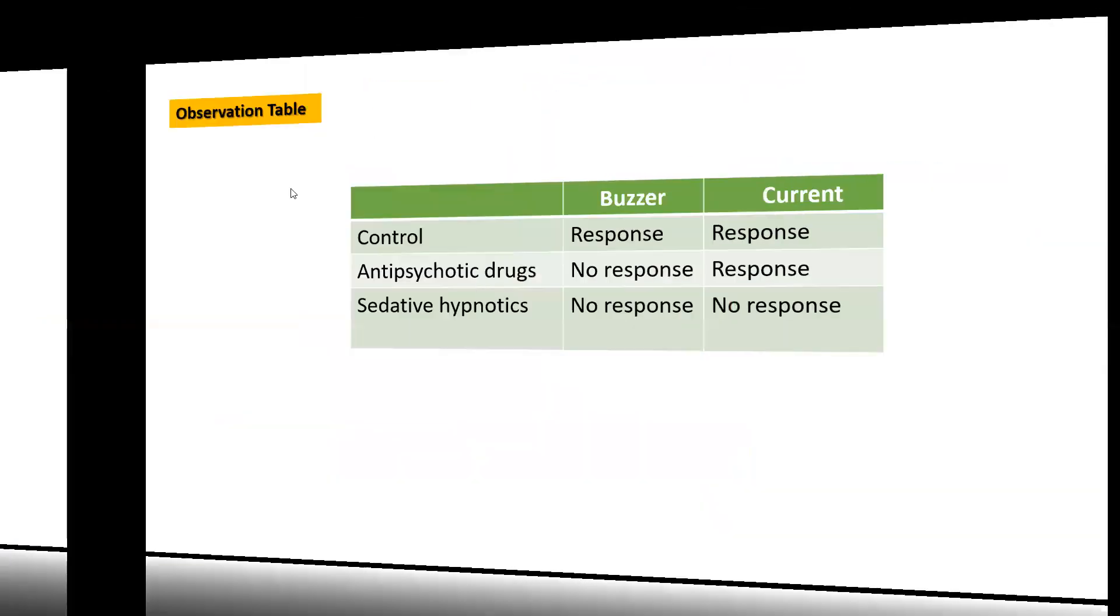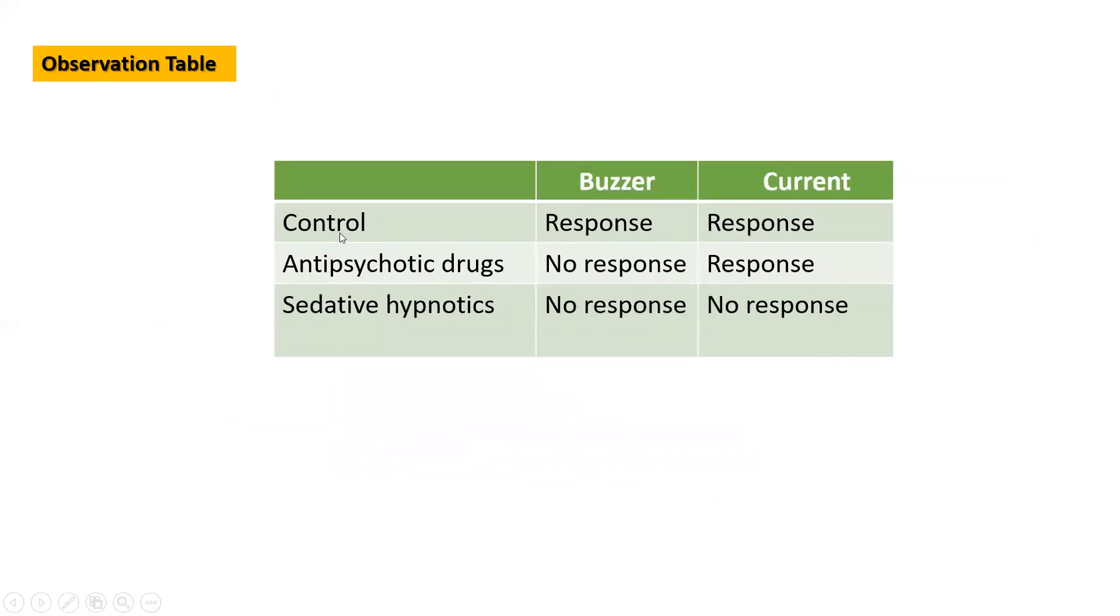Then you make an observation table. Suppose you have the control. If you give the buzzer and current, the animal shows the response. Antipsychotic drug is there. For buzzer, there is no response, but for current, there is a response because it is a stimulus of pain. That's why the animal recognizes this pain and it will move forward, but it will not climb to the pole.